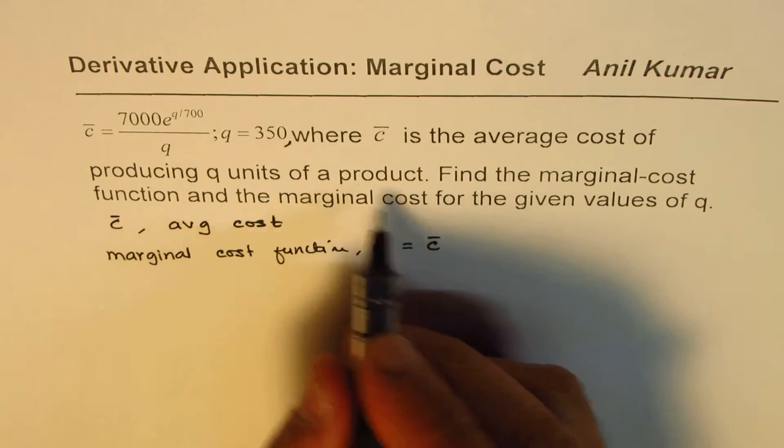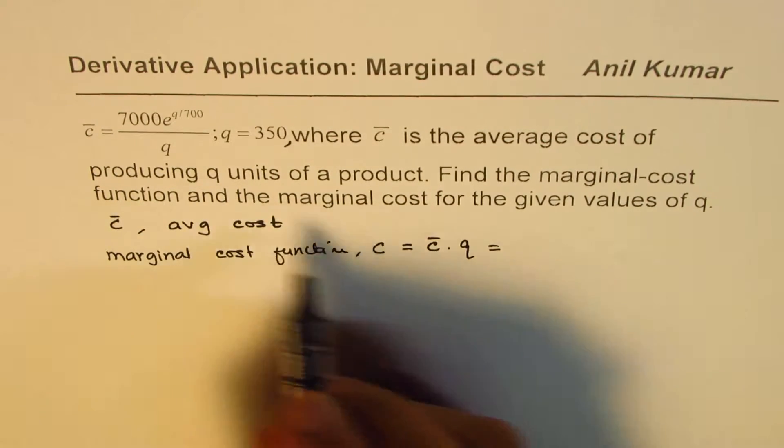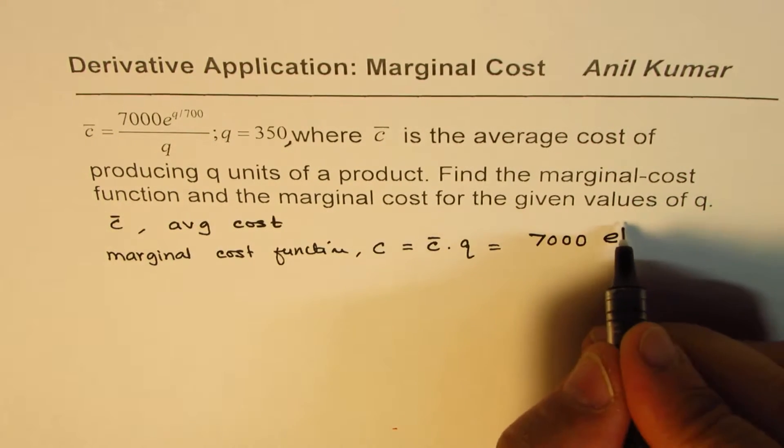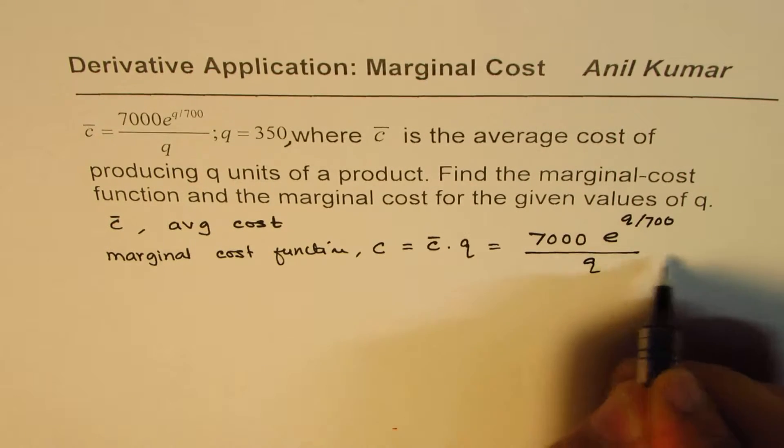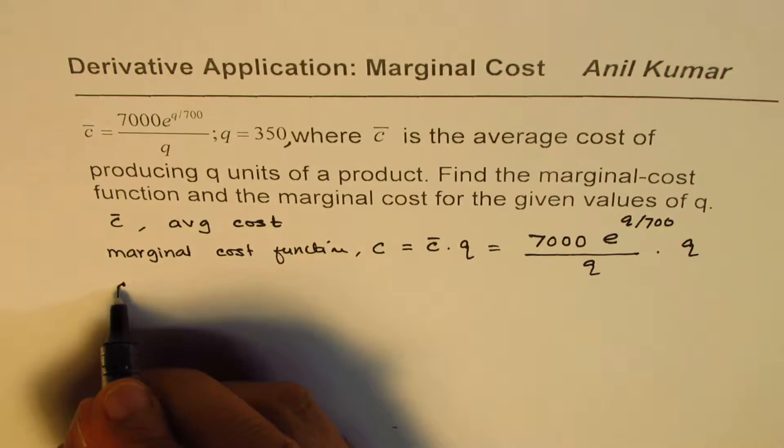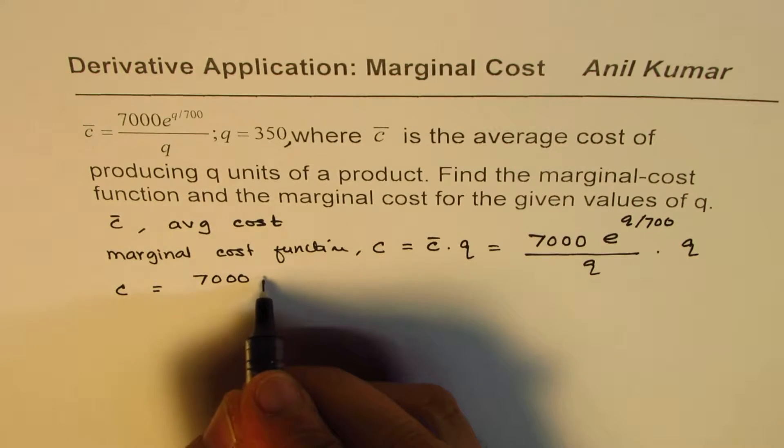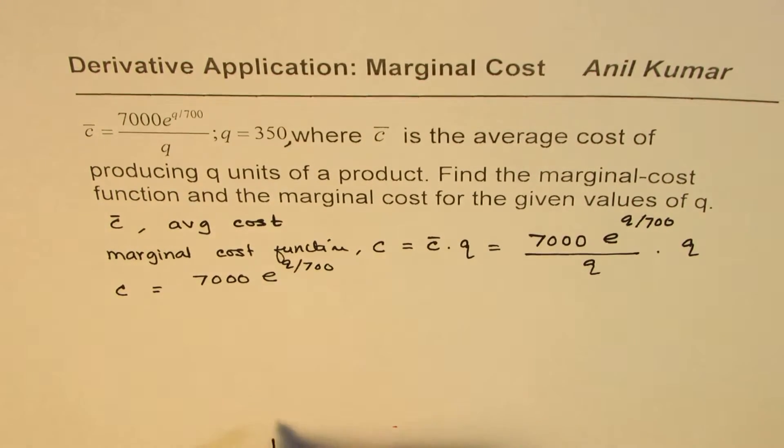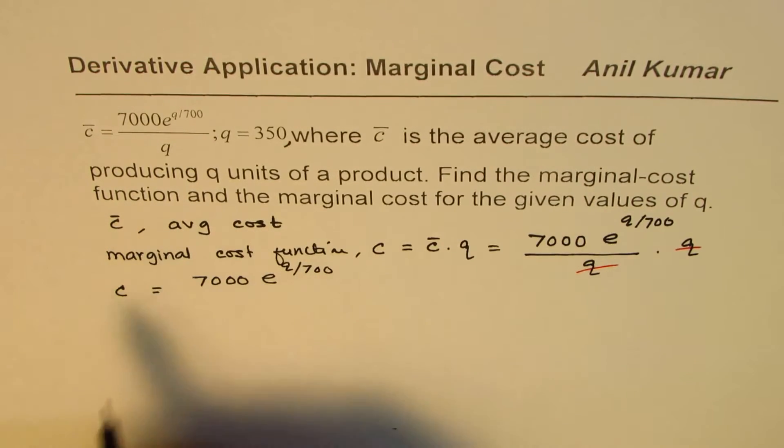From the given equation, the average cost is 7000e^(q/700)/q. We multiply this by q to get the marginal cost function c = 7000e^(q/700)/q × q. The q cancels, giving us c = 7000e^(q/700). That is the marginal cost function.